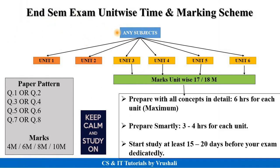This is the end-sem exam unit-wise time and marking scheme. There are a total of 5 subjects in your syllabus, and each subject has a total of 6 units. Some universities have 6 units in the end-sem exam and some have 4 units. In Pune University, you have a total of 4 units — unit 3, unit 4, unit 5, and unit 6 — in your end-sem exam. For every unit, you need to answer questions worth around 17 to 18 marks in your final exam.